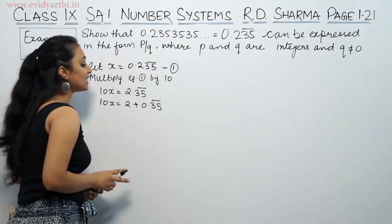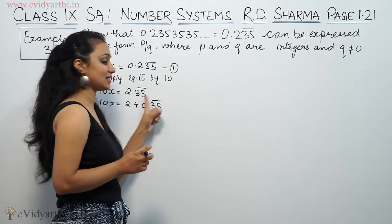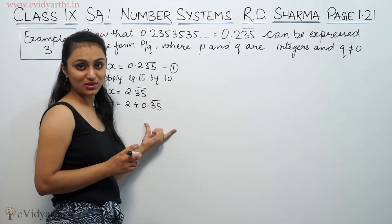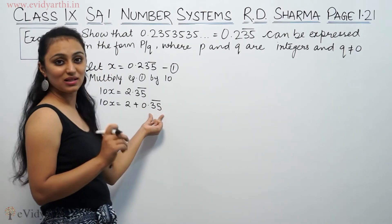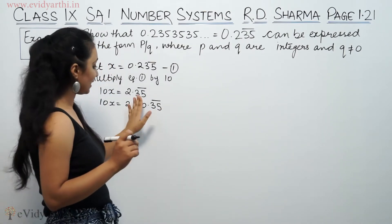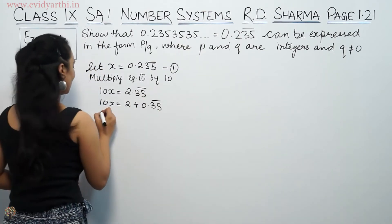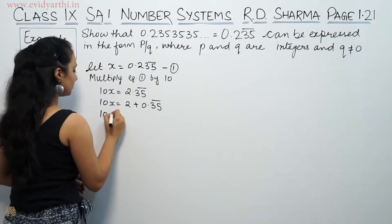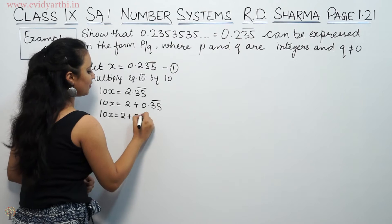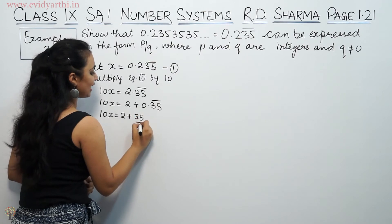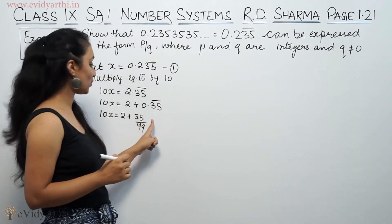We have seen in the last video how to convert a repeating decimal to a fraction using the decimal-over-decimal method. So 0.35 bar equals 35 by 99.